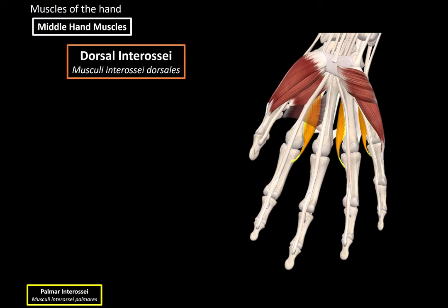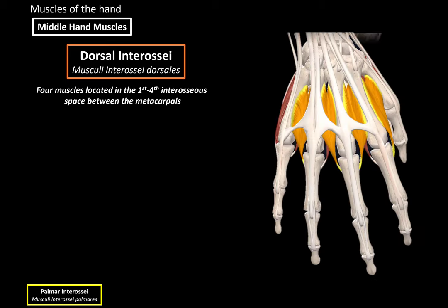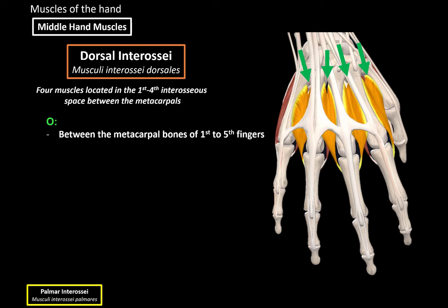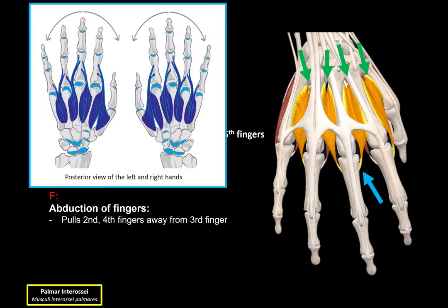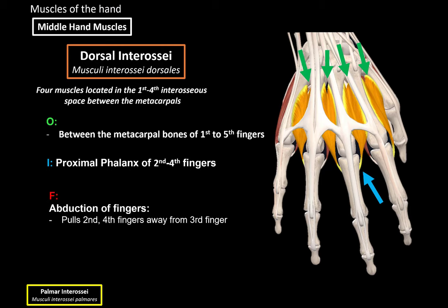Then we have the Dorsal Interossei muscles. There are four Dorsal Interossei muscles, located in the first to fourth interossei spaces between the metacarpals. They originate between the metacarpal bones of the first to fifth fingers, and they insert at the proximal phalanx of the second to fourth fingers. When these muscle fibers contract, they abduct the fingers — pulling the second and fourth fingers away from the third finger.